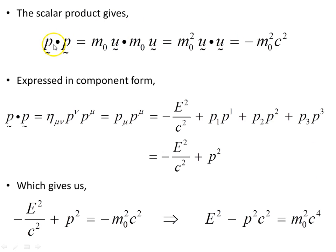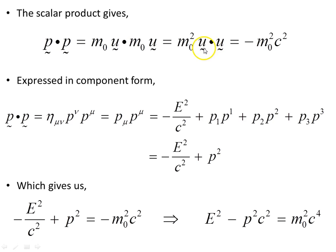The scalar product of the momentum 4-vector is m₀u dotted with itself. Factoring out m₀ squared, we have the velocity 4-vector dotted with itself, which we saw in a previous video was minus c squared. So the scalar product of the momentum 4-vector is minus m₀² times c².